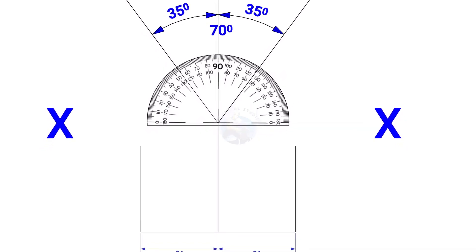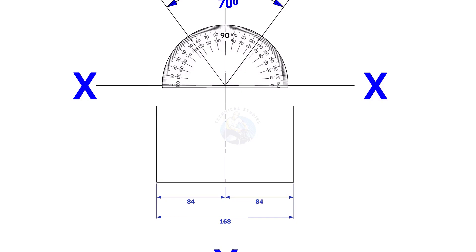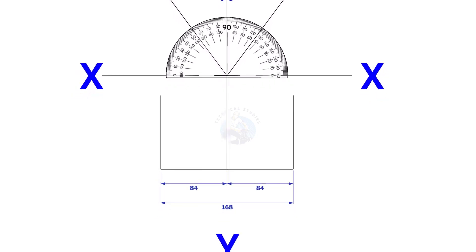Mark 84 millimeters each on both sides of the YY axis, that is the outside diameter of the header. Draw perpendicular lines on these marks, as shown.